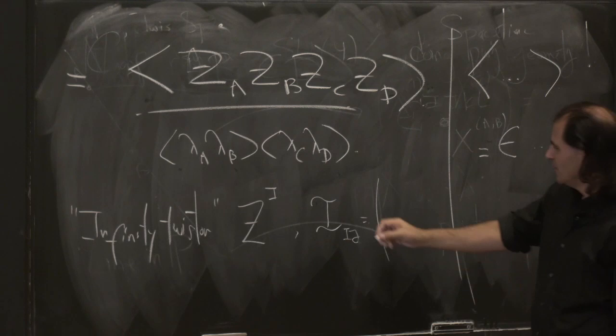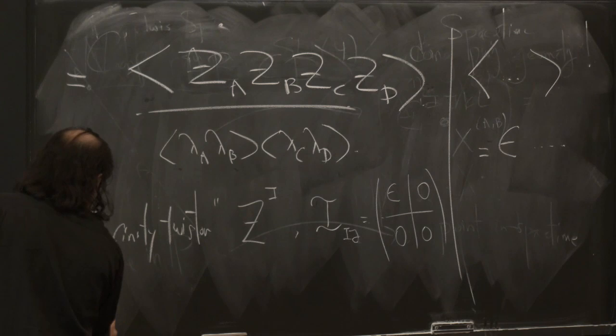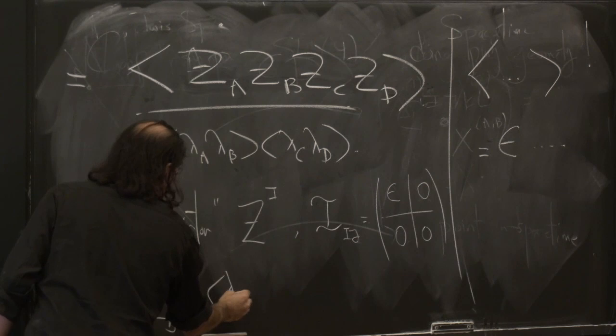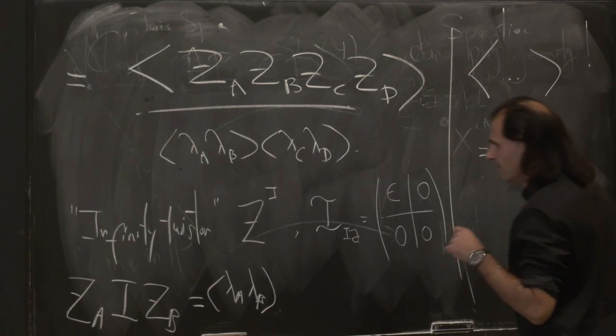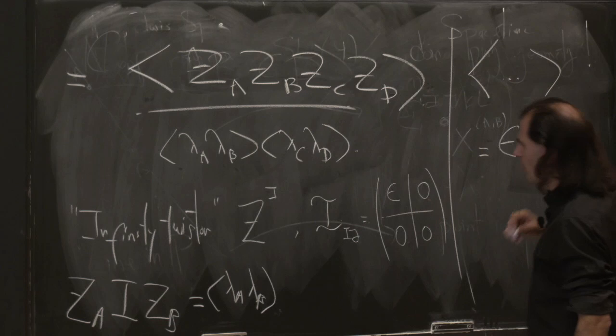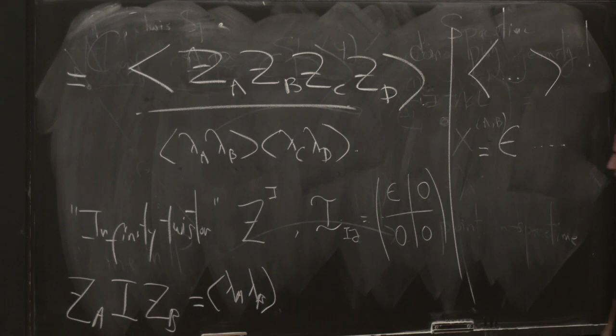So this guy is a two-by-two epsilon symbol padded with zeros. If I define that, then [Z_A, infinity-twistor, Z_B] is just angle-bracket lambda_A lambda_B angle-bracket. Now, what is this? Let me come back to why it's called the infinity twistor. In any case, it's clearly something that breaks SL4, but keeps Poincaré — keeps translations and Lorentz transformations. Good. We knew that (x minus y)² is not conformally invariant, and here it is: the numerator is a nice SL4-invariant thing, but the denominator explicitly breaks conformal symmetry.